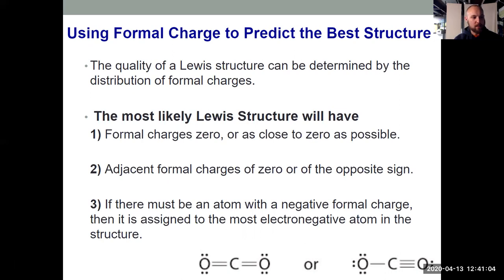So on the bottom there, we have two possible Lewis structures for carbon dioxide. The one on the left is the proper Lewis structure. Both of them satisfy the octet rule. Both of them use the appropriate number of electrons, which is 16 in this case when I'm building the Lewis structure.